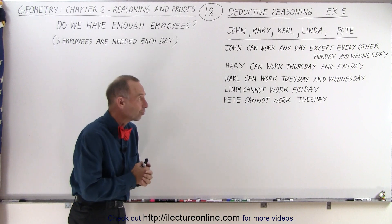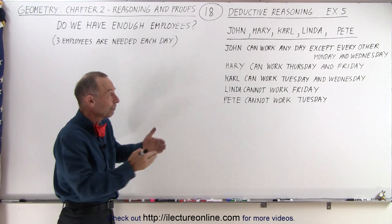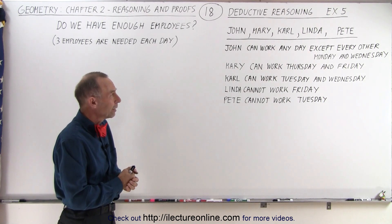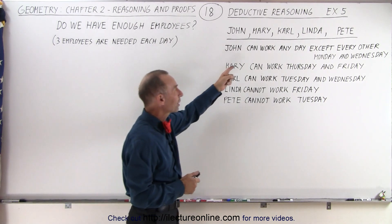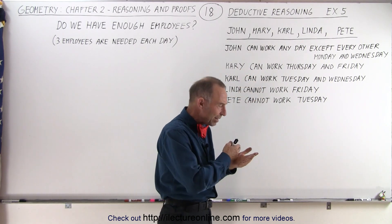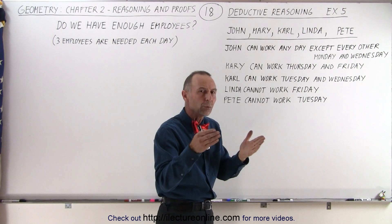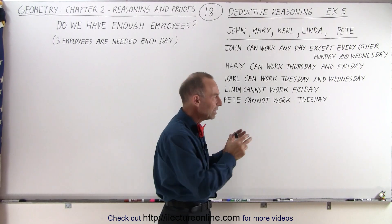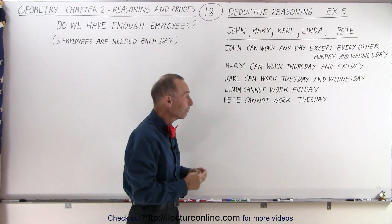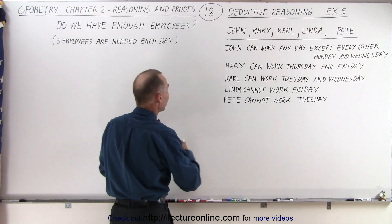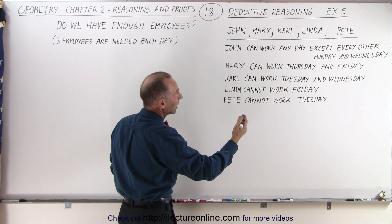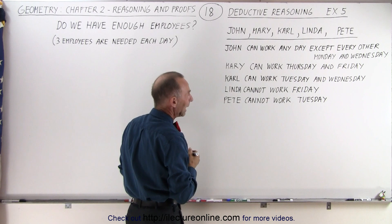The question is, if you're the manager of that store, are you able to put enough employees in the store every day of the week for every week of the month? Since John can work every day except every other Monday and Wednesday, every other week he cannot work the same days. So we need two calendars for two different weeks. Week one John can work every day; week two he can only work three days — not Monday and not Wednesday.